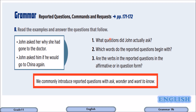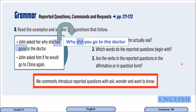Read the examples and answer the questions that follow. 'John asked her why she had gone to the doctor.' 'John asked him if he would go to China again.' The question is: what questions did John actually ask? These sentences end with a full stop, meaning they are reported questions, not direct ones. We need to think about the backshift in tenses. Here 'had gone' is past perfect, so the direct question should be in past simple: 'Why did you go to the doctor?'